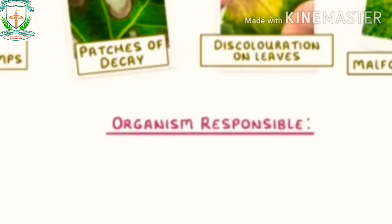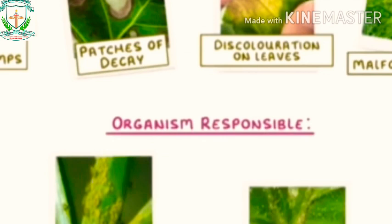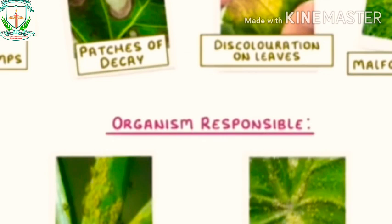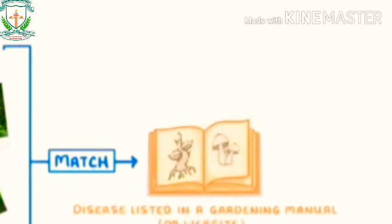Some other symptoms that diseased plants might have include abnormal growths or lumps, malformed stems or leaves, patches of decay, or spots of discoloration on their leaves. In some cases, you might even be able to see the organism responsible, particularly if it is fairly large, like aphids or spider mites. When trying to diagnose disease, the easiest thing to do is take basic observations and try to match the symptoms you see to a disease listed in a gardening manual or website.